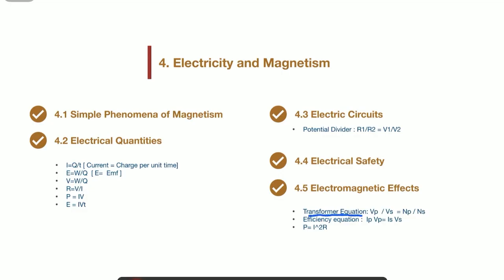This is the transformer equation whereby VP represents the primary voltage, VS is the secondary voltage, NP represents the number of turns in the primary coil and NS represents the number of turns in the secondary coil.